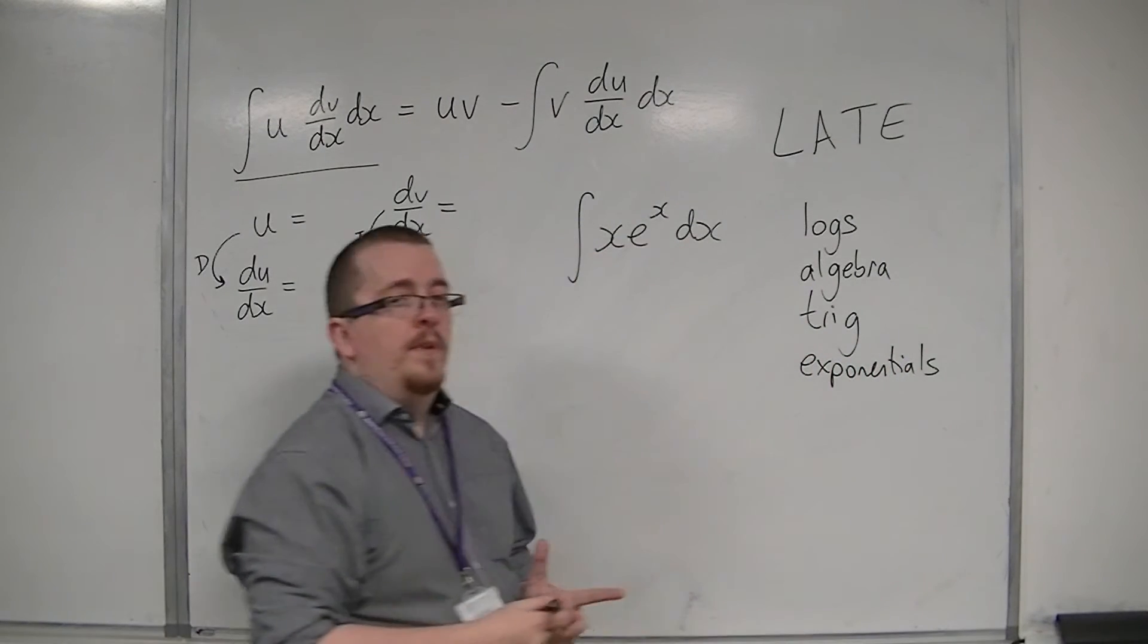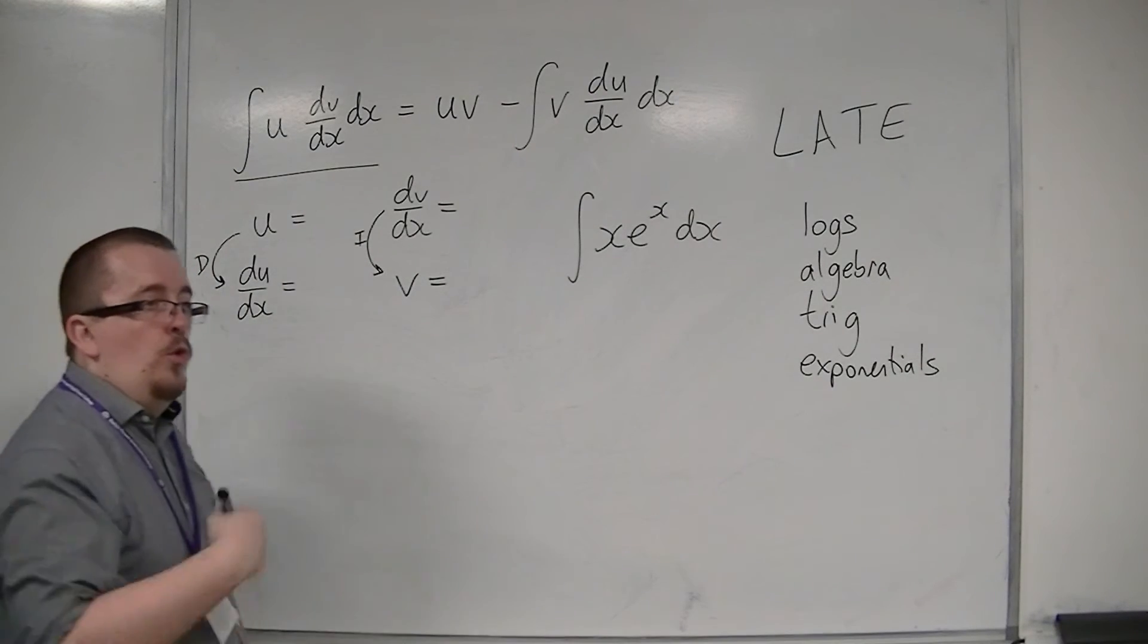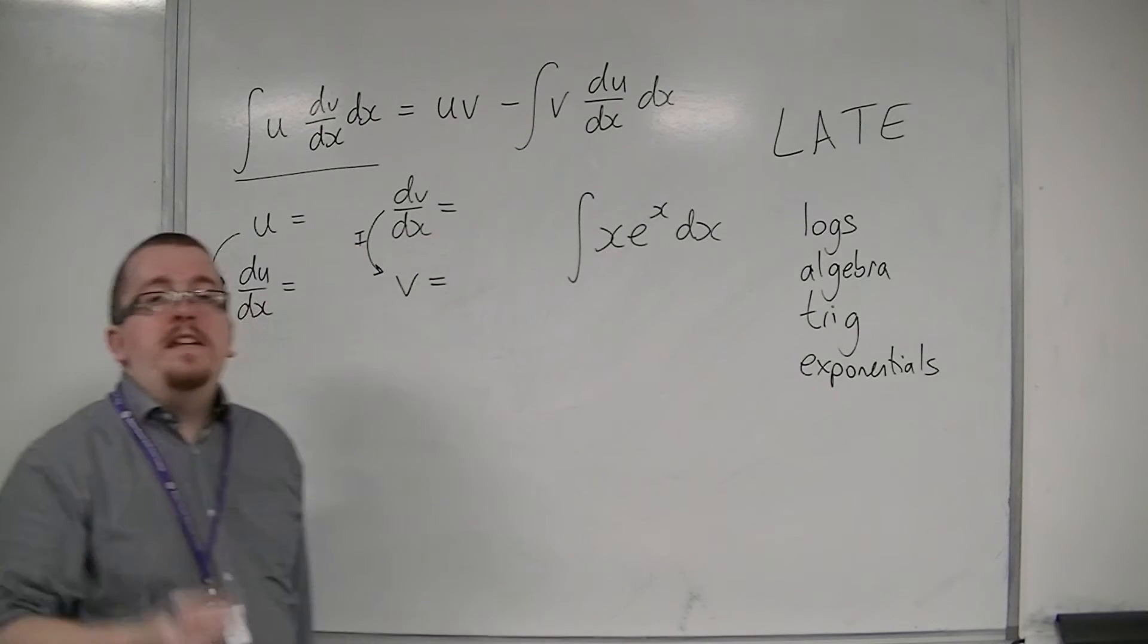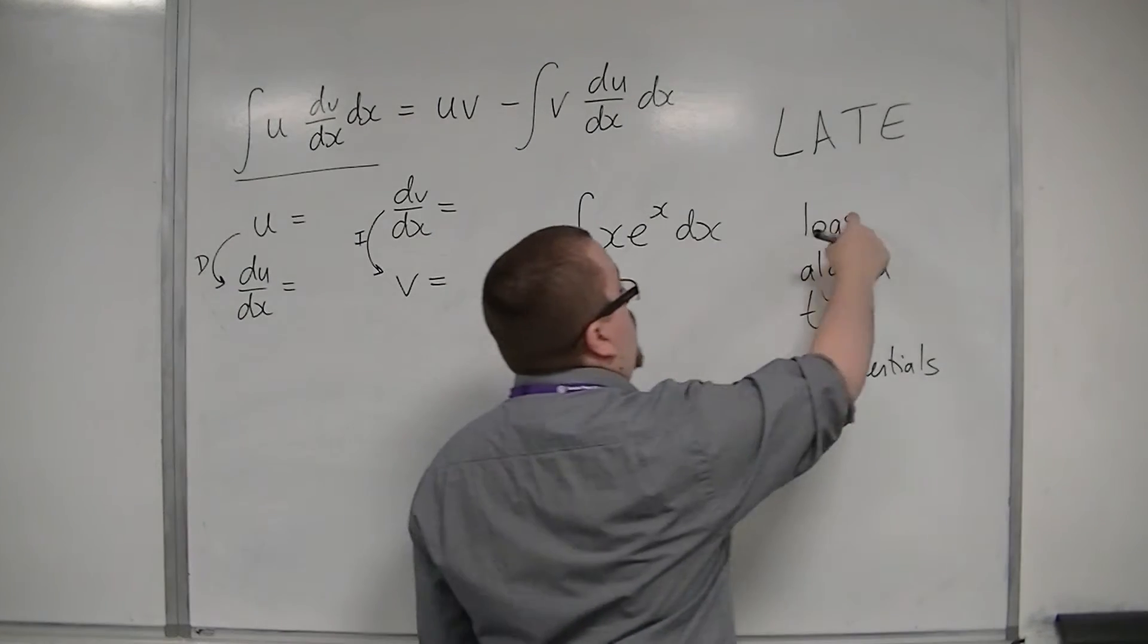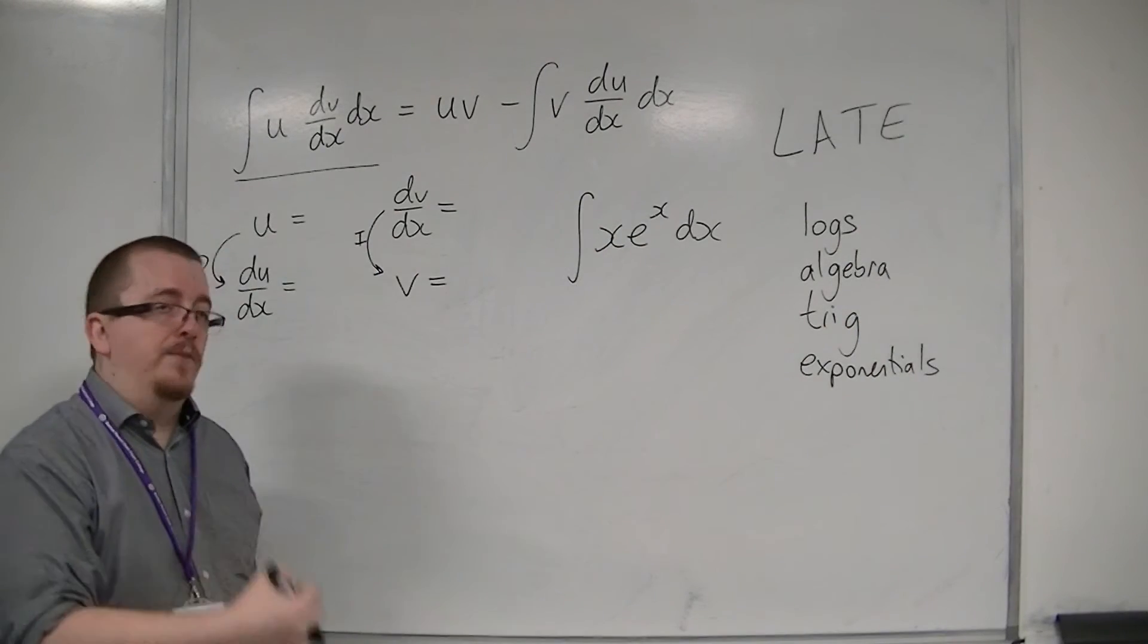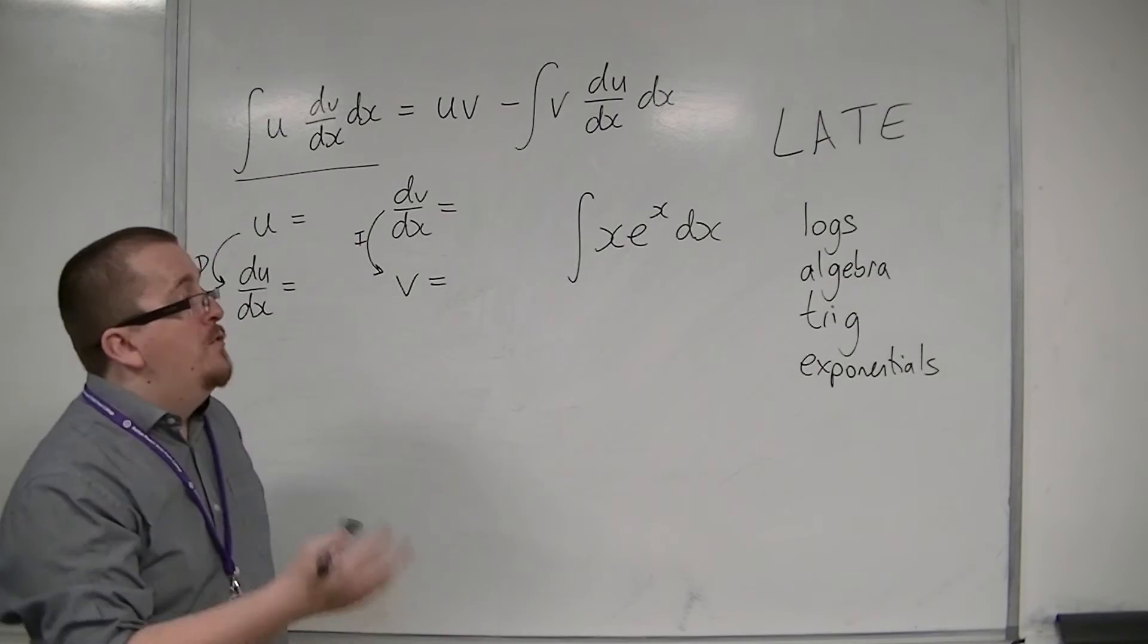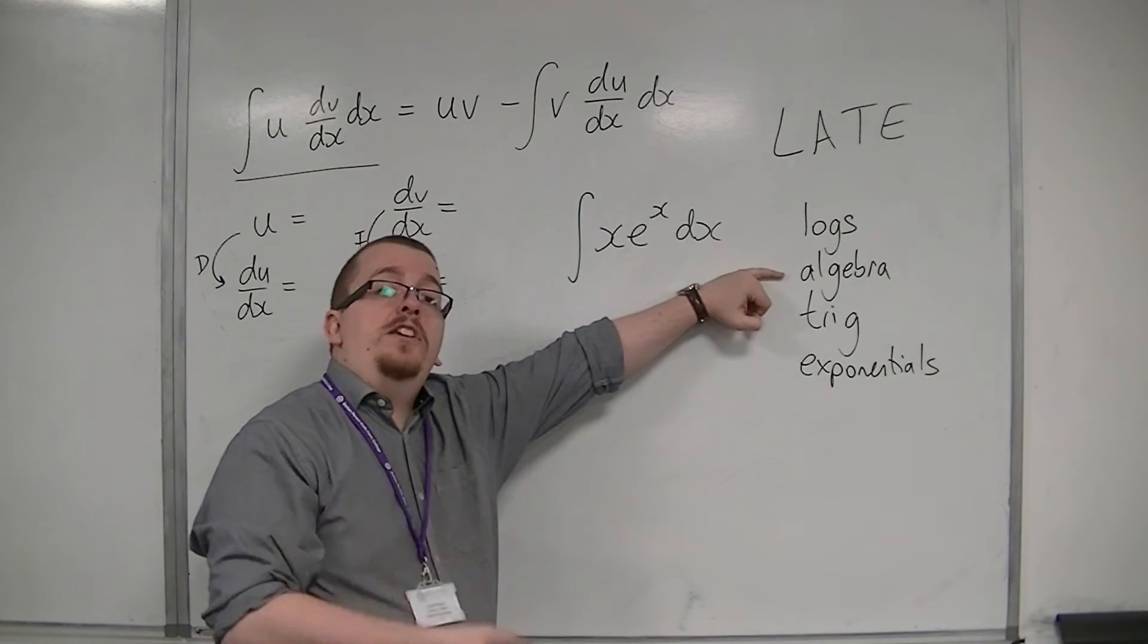Now, what it's telling you is a way of remembering in which order you should pick the u. So, if the integral includes a logarithm, then that should be u. If there are no logarithms, but there's some algebra, so that's counted as being, like, the x there, or x squared, or something like that, then that comes next. So, if there are no logarithms, then the algebra must be considered as u next.